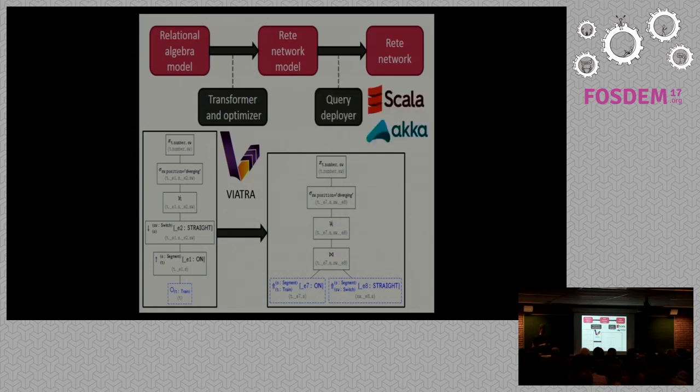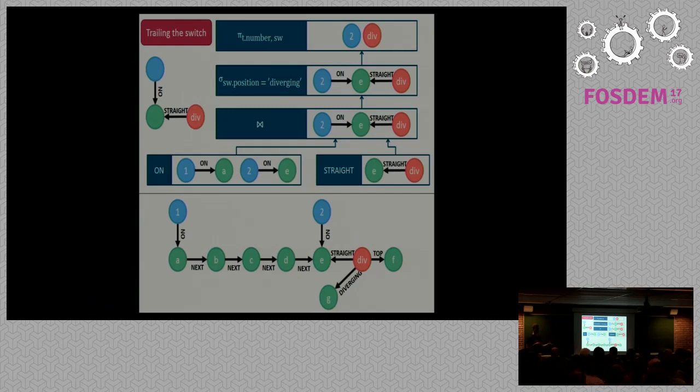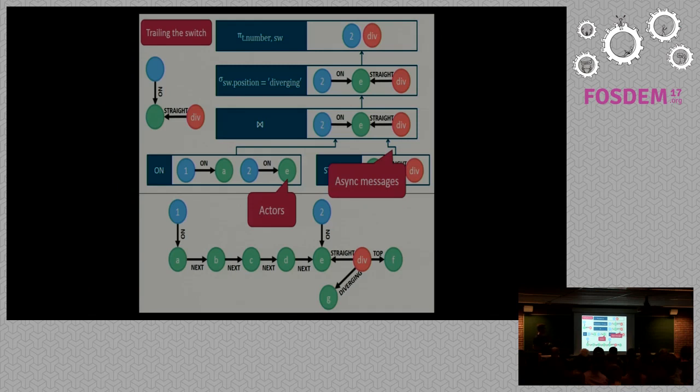Interestingly, for the transformation and the optimization, we use Viatra, which on its own is an incremental graph query engine. So we use an incremental graph query engine to drive another incremental graph query engine. In the end we get a bit more complex network, which is the RETE network. And we use our query deployer which uses asynchronous technologies and functional programming like Scala and the Akka toolkit. So why do we use these technologies? Well, if we revisit our slide on the trailing the switch constraint, we find that the RETE nodes that perform the computation can be thought of as actors in the actor programming paradigm. And actually this model lends itself very well to the actor programming paradigm because you can think of the propagation of the tuples in the network as asynchronous messages.